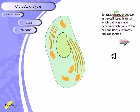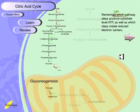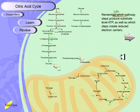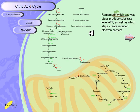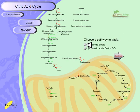To track energy production inside the cell, we need to keep in mind which pathway steps occur in which part of the cell and how substrates are transported. We should remember which pathway steps produce substrate-level ATP and which steps create reduced electron carriers, because NADH, FADH2, and similar carriers are energetic molecules with potential to produce energy.